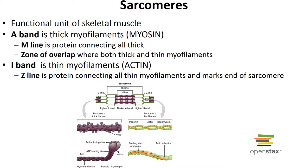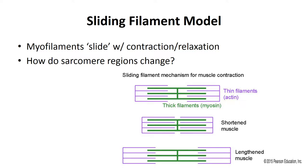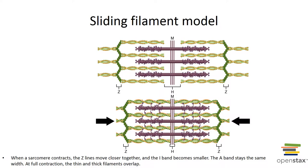The sarcomere is the functional unit of skeletal muscle, and you can see in more detail the regions discussed: the M-line, I-band, A-band, and Z-line. The sliding filament model shows how the zones and regions overlap. When a sarcomere contracts, the Z-lines move closer together and the I-band becomes smaller. The A-band stays the same. At full contraction the thick and thin filaments overlap.